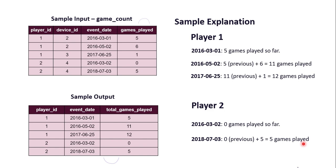Now the question is how will we calculate the running total of games played? We will make use of a function combined with a window function. Window functions help us perform calculations across a set of table rows related to the current row. Unlike aggregation functions that group rows, window functions do not group rows into a single output row — instead they compute values for each row separately, which is exactly what we want.